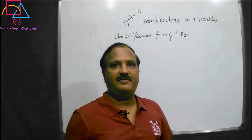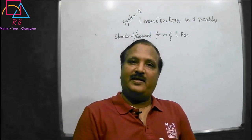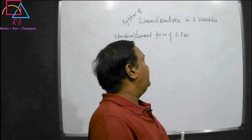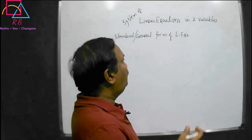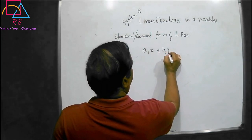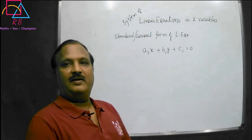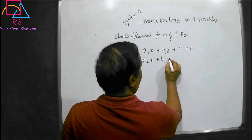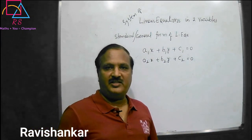If I write a system of linear equations in two variables, then that means two equations will come. When there are two equations, then only you will be getting some solution. So first, understand the general standard form of linear equations in two variables: A1x plus B1y plus C1 is equal to zero — first equation. A2x plus B2y plus C2 is equal to zero — second equation. These are the general form.